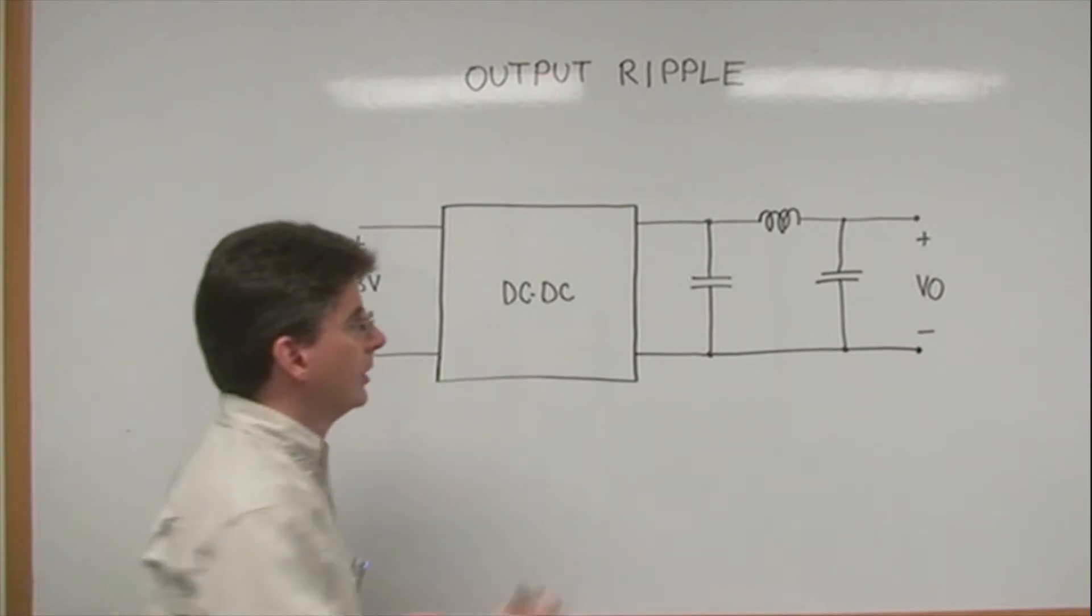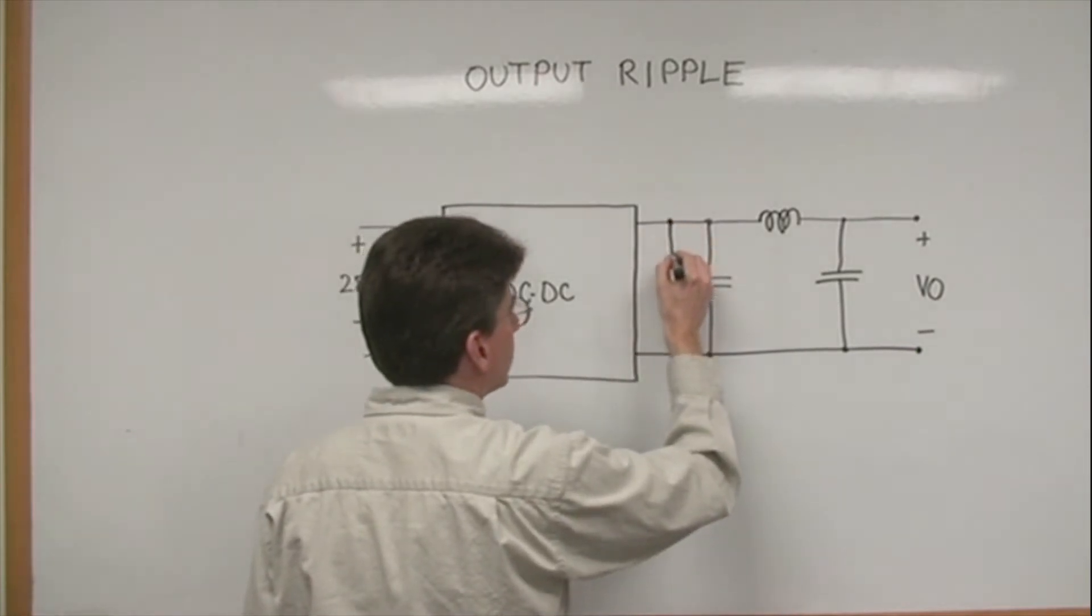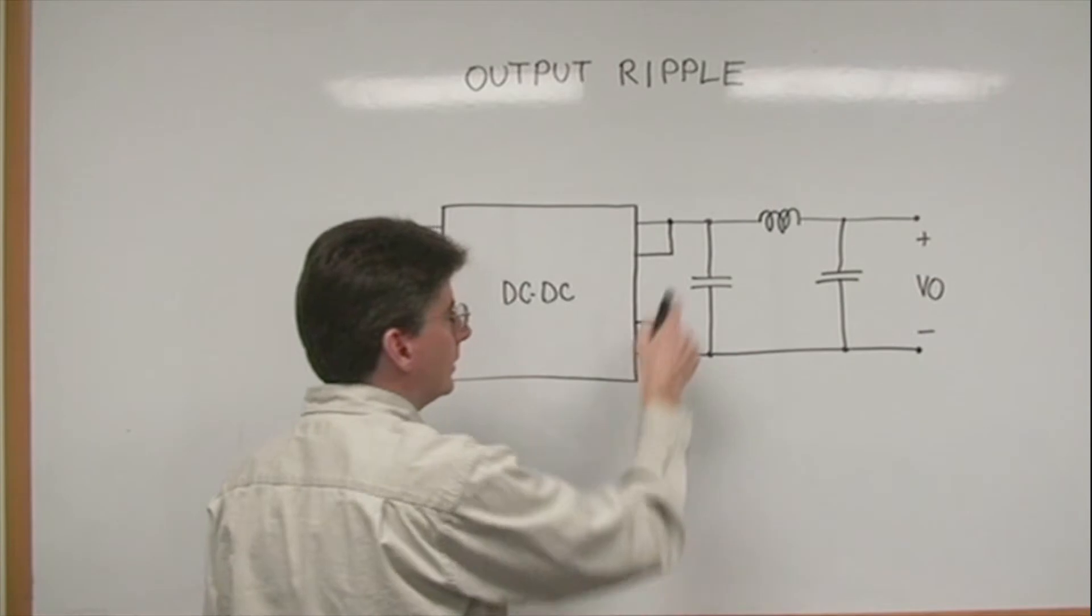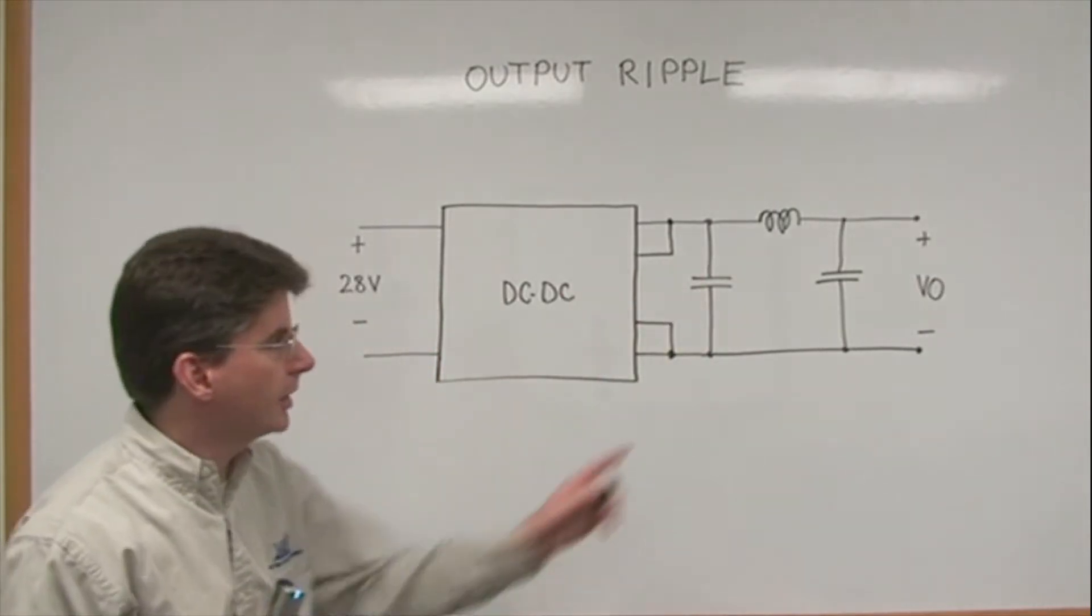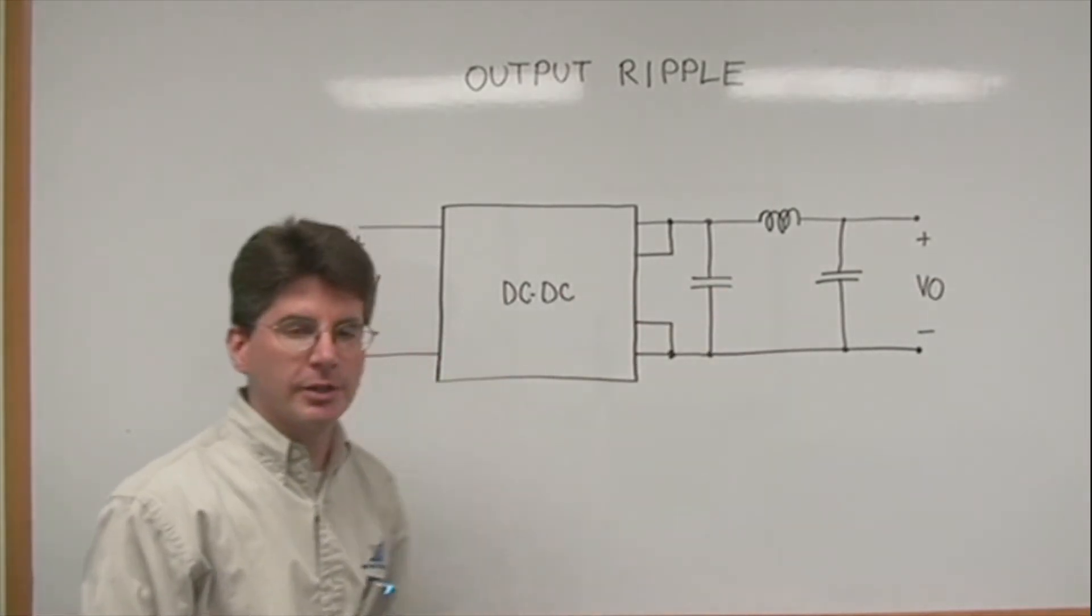There is some danger here. If this converter has remote sense, the remote sense lines have to be connected this side of this extra LC. Otherwise, the LC can affect the internal control loop of the DC-DC converter.